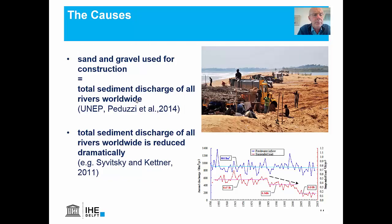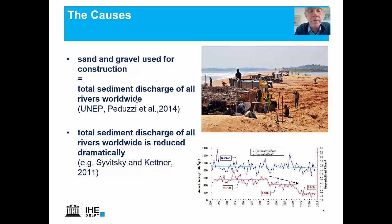What causes these kinds of problems? One of the major things that happens is that sand and gravel used for construction is taken away from the beaches at an astonishing rate. The amount is similar to the total sediment discharge of all rivers worldwide. And at the same time, the total sediment discharge of all rivers is reduced, as you see for instance in this example of the Yangtze River.